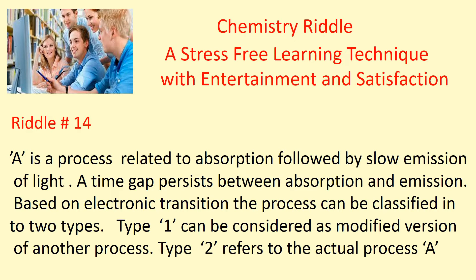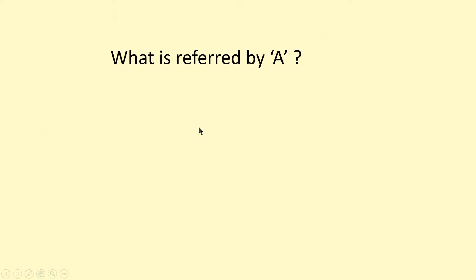A is a process related to absorption followed by slow emission of light. A time gap persists between absorption and emission. Based on electronic transition, the process can be classified into two types. Type 1 can be considered as a modified version of another process. Type 2 refers to the actual process A. So this is the riddle. Now, the primary question is: what is referred to by A? Guess the answer.